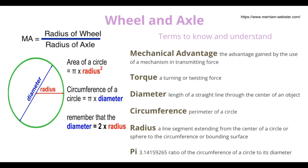Another term is torque. We're not going to get too deeply into torque, but since we're talking about a wheel and axle, you need to understand that torque is the turning or twisting of force. We're also going to talk about diameter — the length of a straight line through the center of an object. Then we have circumference, which is the distance all the way around our circle, and radius, which goes from the center of the circle out to the edge or bounding surface. That's our radius.